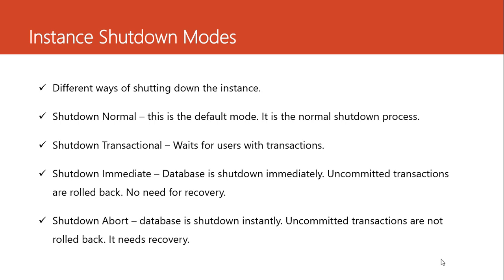There are different ways of shutting down the instance. The moment we issue a shutdown command, no new connections are allowed to the database. The first mode is shutdown normal, which is the default. Everything happens as it should — we begin from the close stage, then dismount, then shutdown. Shutdown normal waits for anyone connected to the database to disconnect, whether they have anything they are doing or not. It is the safest mode but the slowest.